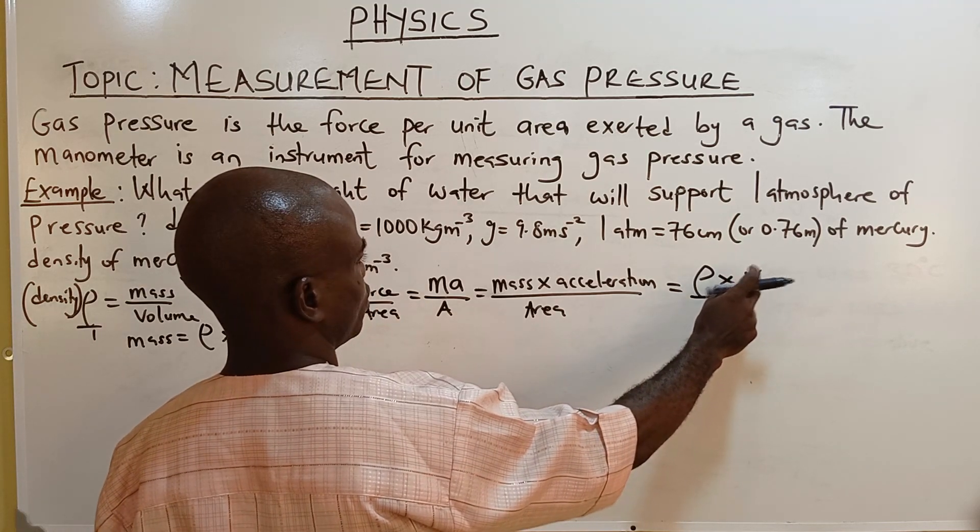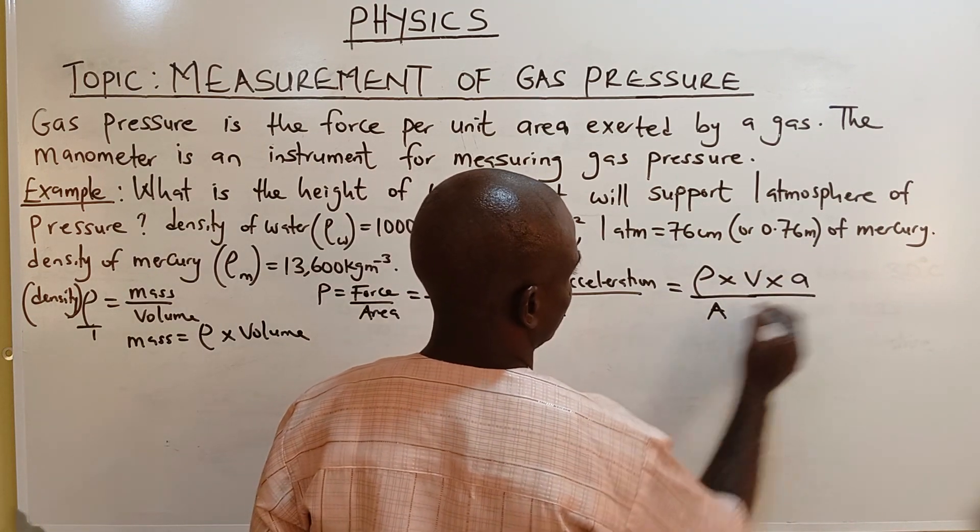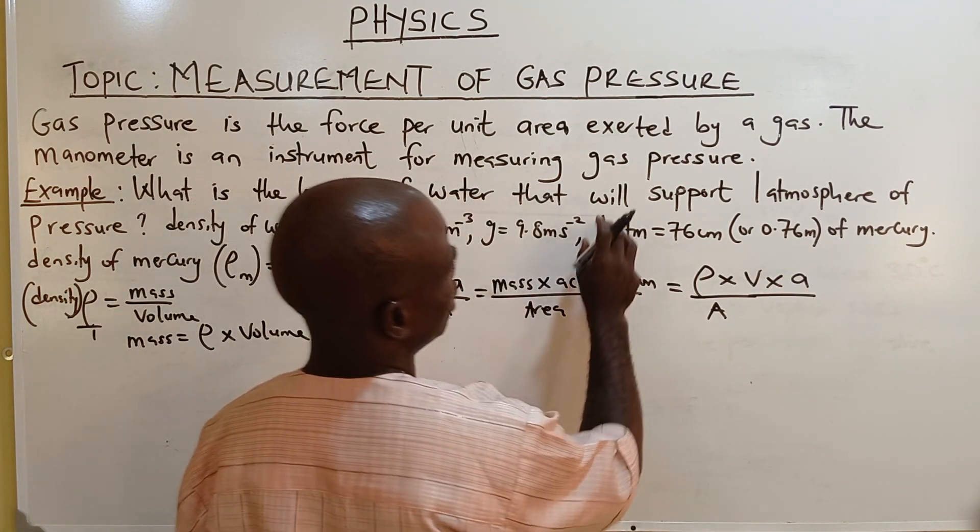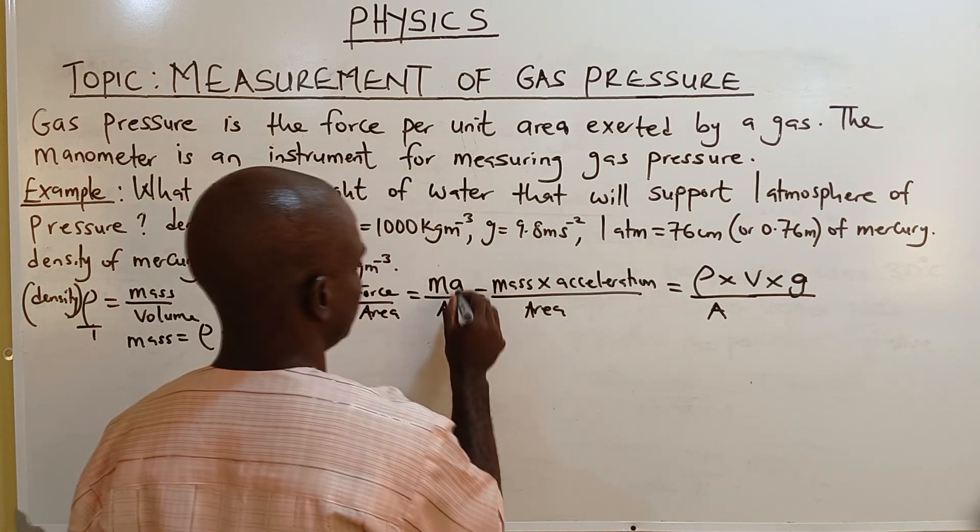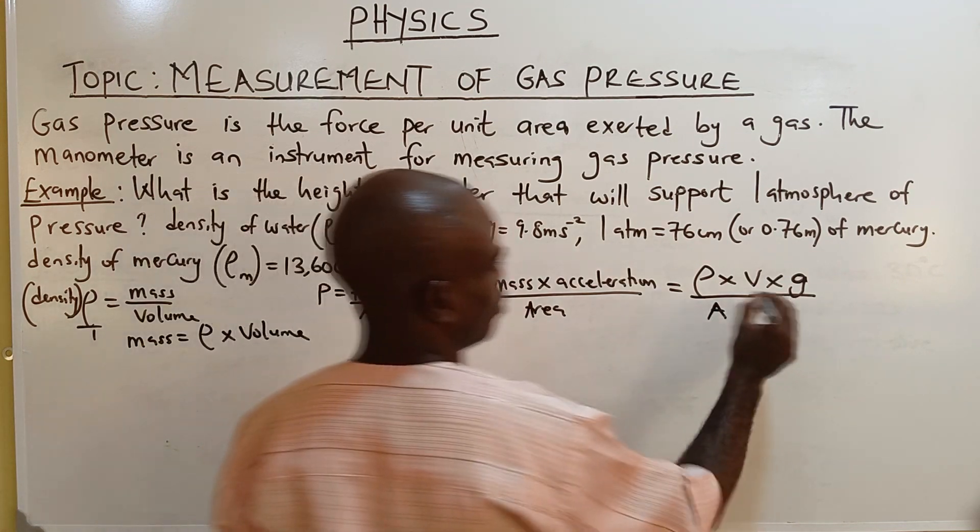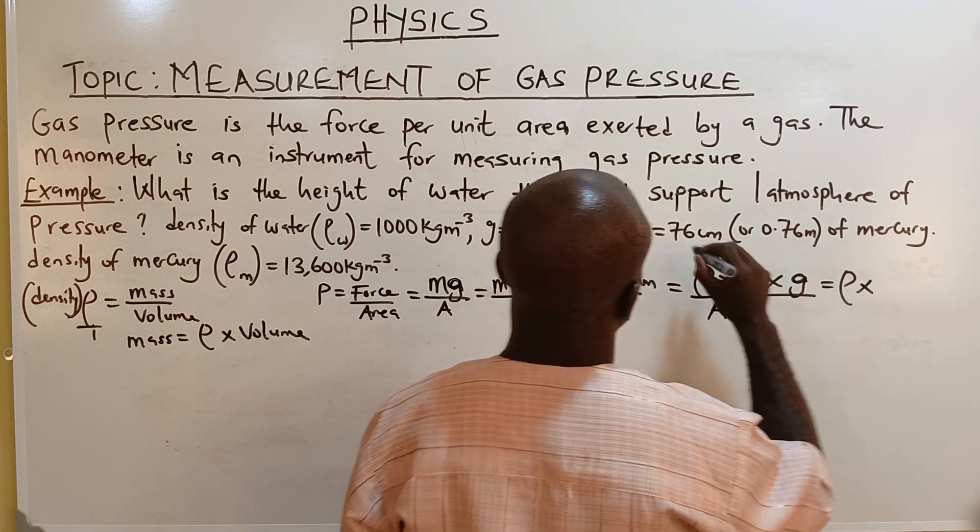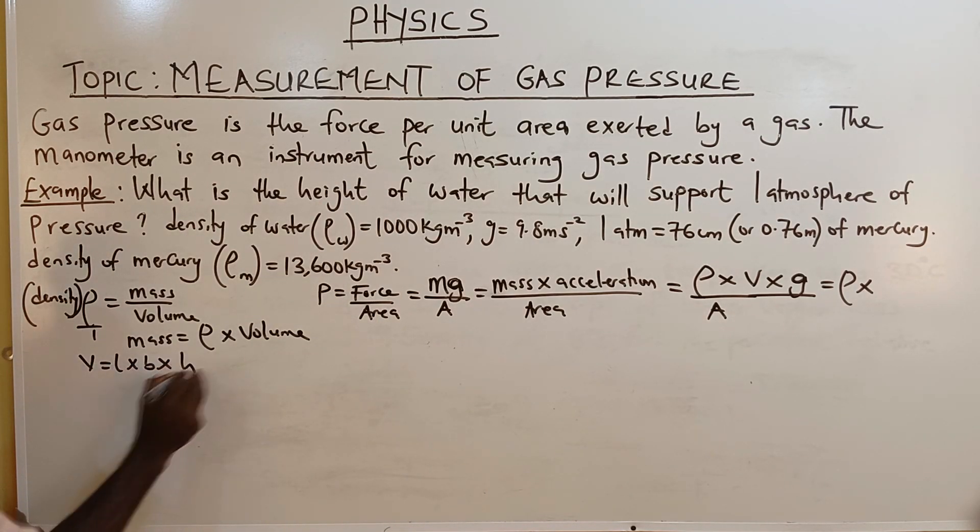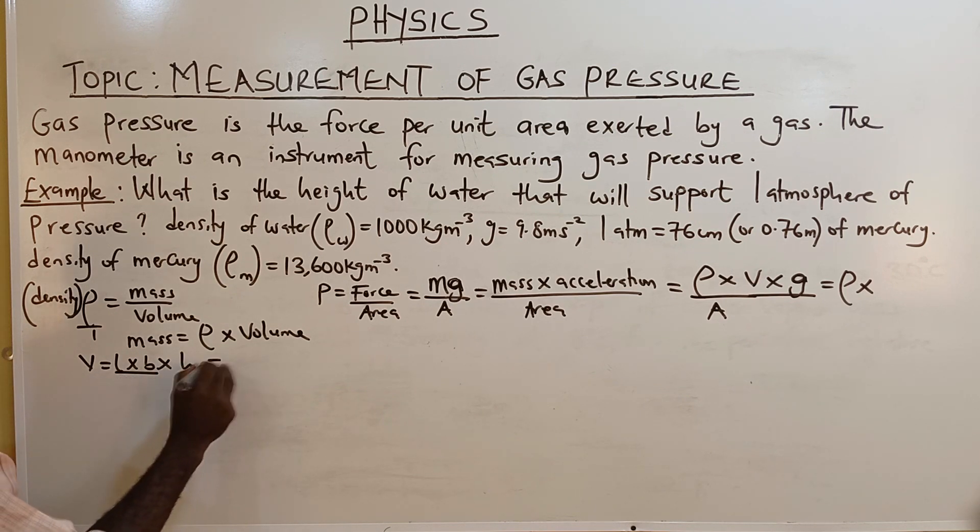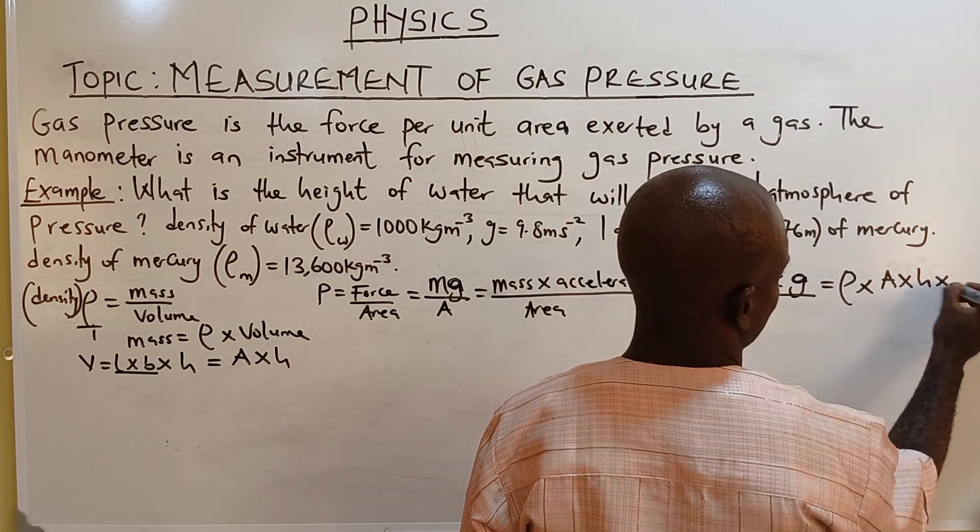Density times volume times acceleration. And this acceleration, since we are dealing with pressure, is gravity G. Now volume is area. We have volume to be length times breadth times height. This length and breadth stands as area times H. We are now replacing volume with area times H times G.